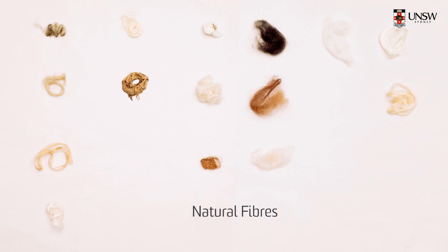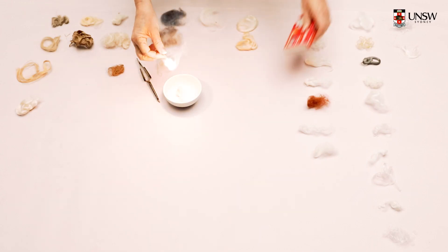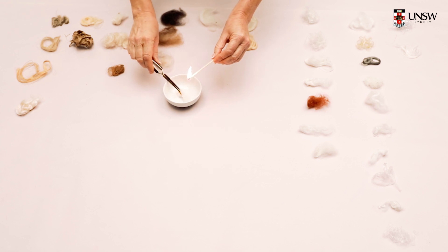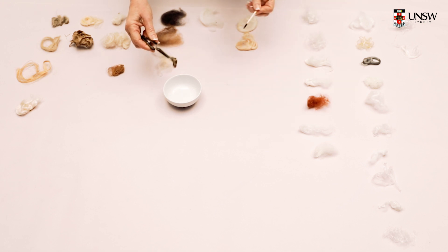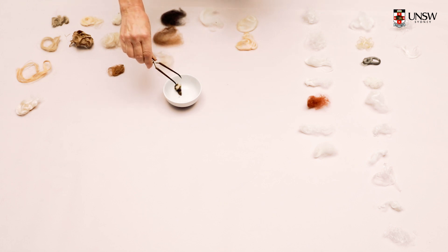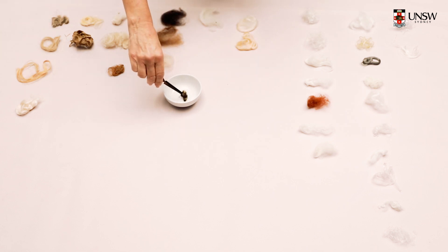Natural fibres come in two types: cellulose and protein. Cellulose fibres are the ones that come from plants. They contain cellulose, and one way of identifying them is the smell when burned — it smells just like burnt paper. All of those cellulose fibres in this group will give essentially that smell of burnt paper.